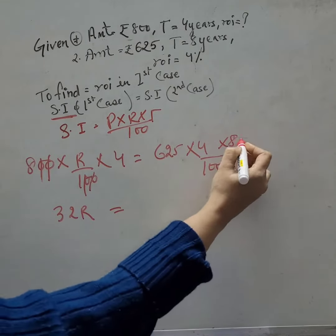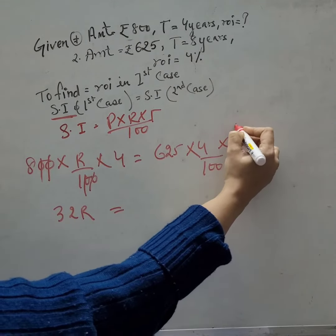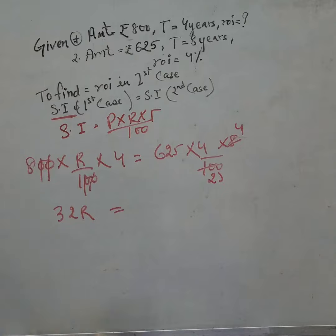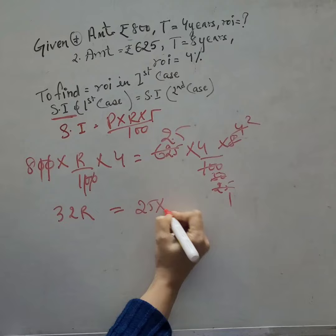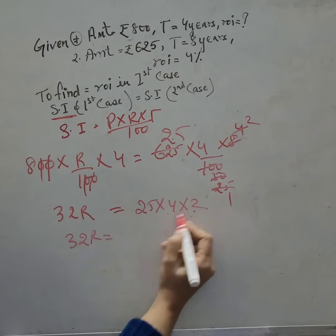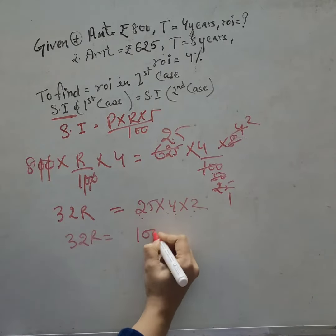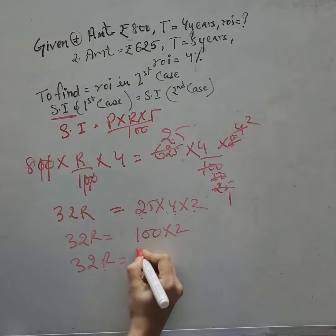R is equal to this. We get 25. Here we get how many? 25 into 4 into 2 equals 32R. 25 into 4 is 100, which gives us 200.